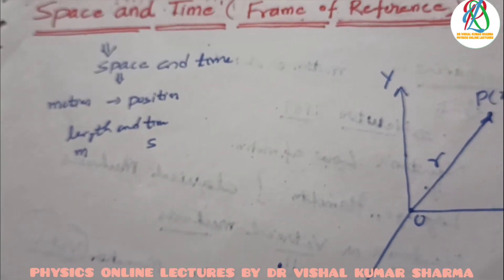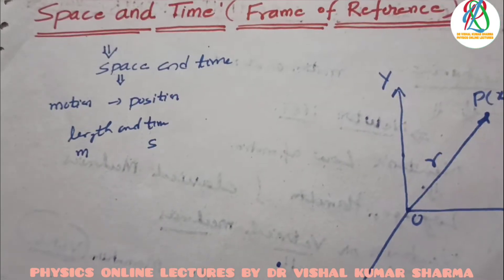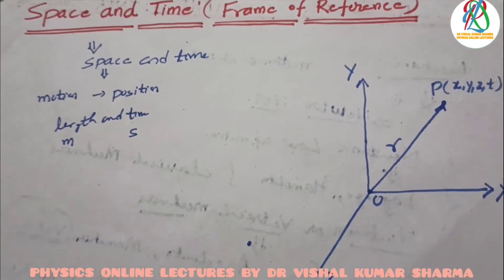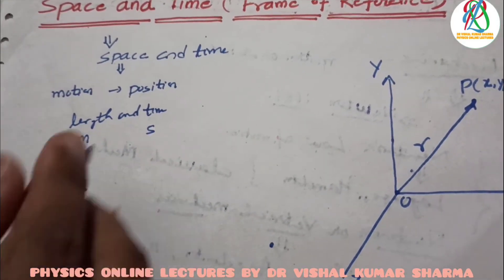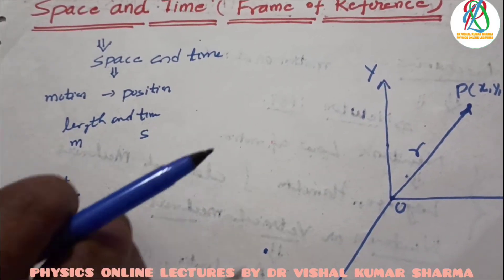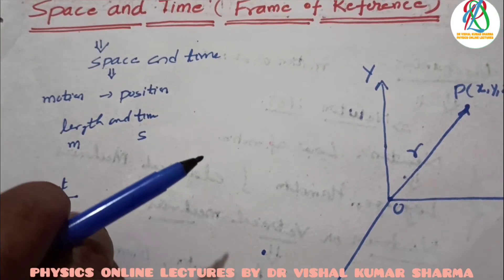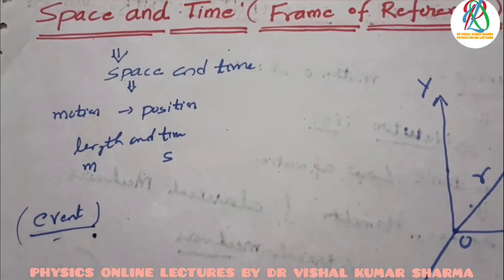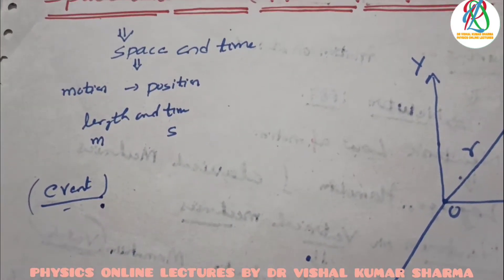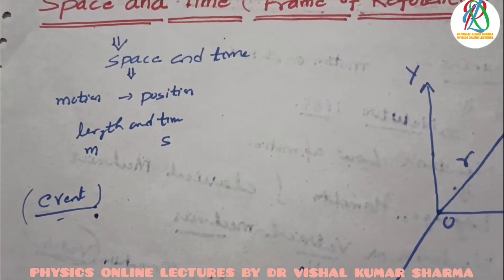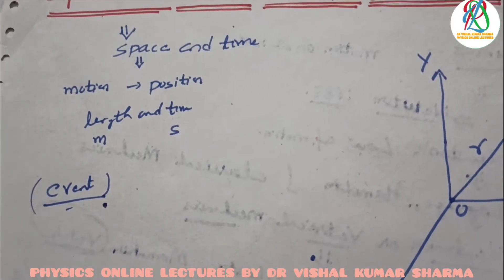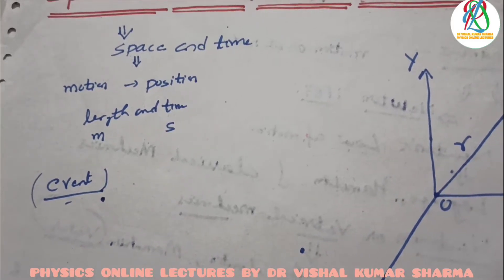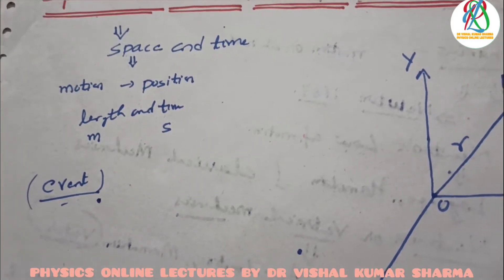The time of occurrence and the point at which a phenomenon takes place together define what is called an event. Any phenomenon which takes place at a certain point, with the inclusion of the time of occurrence, is called an event. Any observer who has synchronized their clock will always agree about the time of an event.